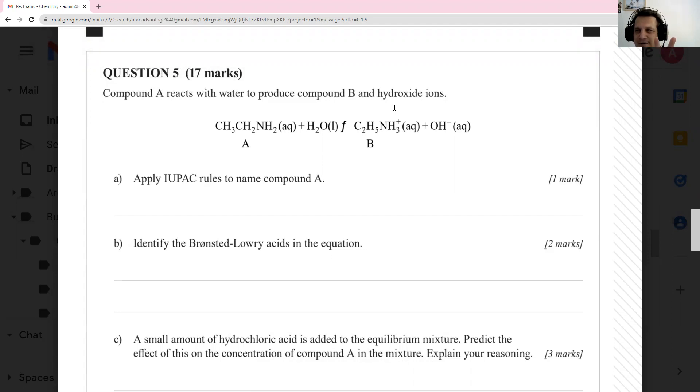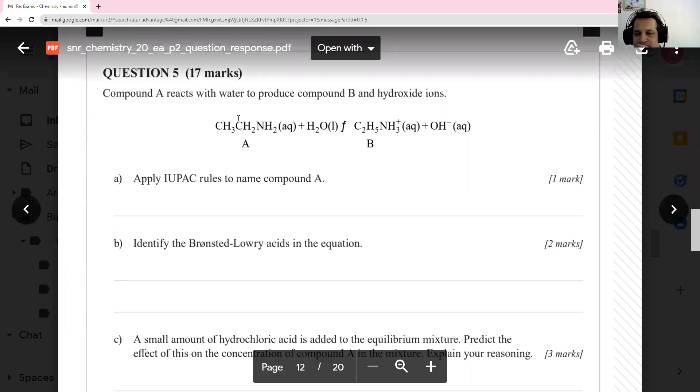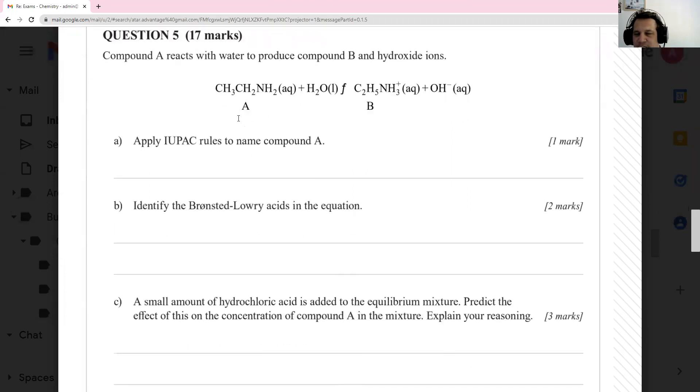Very complicated. The acids or the Bronsted-Lowry acids in the equation have the ability to donate a proton. Any acid really, that's what makes an acid an acid - the ability to donate a proton. So H2O and C2H5NH3+, OH- can't donate a proton because it doesn't have any spare, nor can ethanamine. So question C.